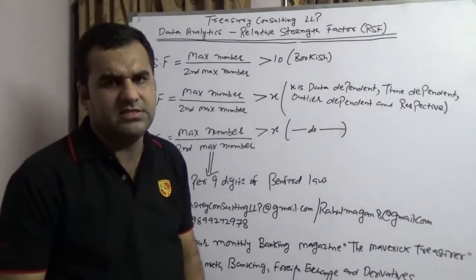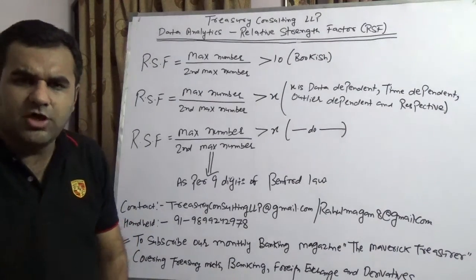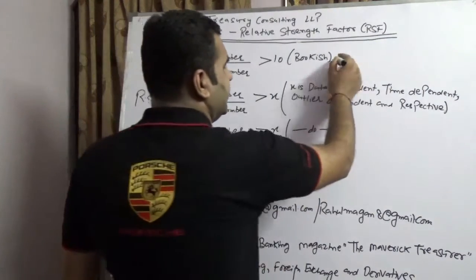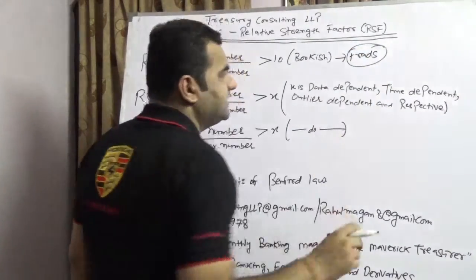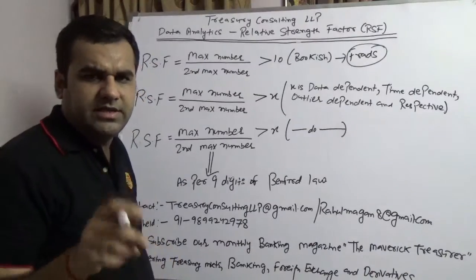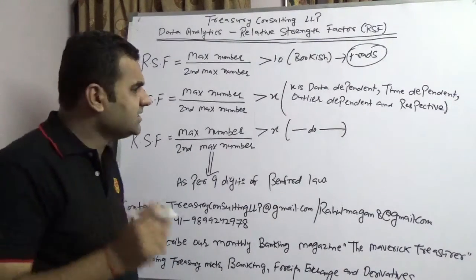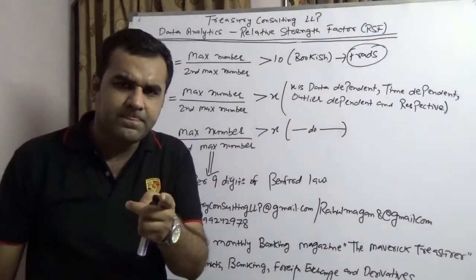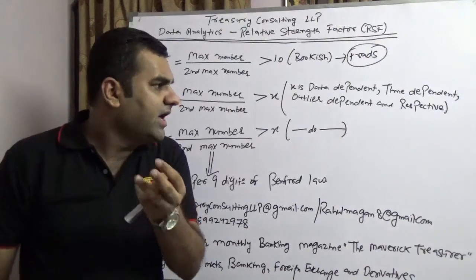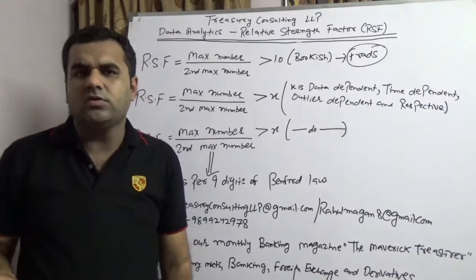But believe me, my dear friends, this is all bookish. It's not that if it is greater than 10, then this would always result in a fraud, because there is a reason behind it. The reason is that this 10, which I refer to as X here, is data-dependent, time-dependent, and outlier-dependent. What is an outlier? Outlier is an extreme data value that distorts our data series.